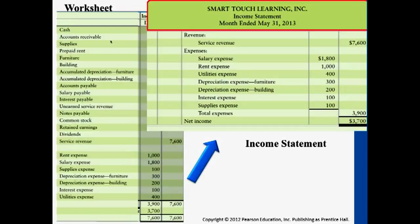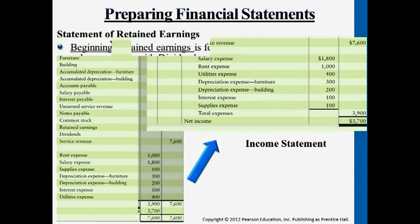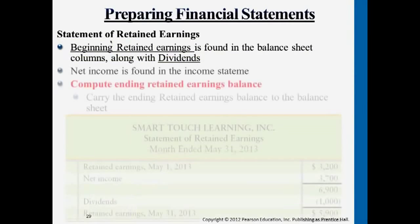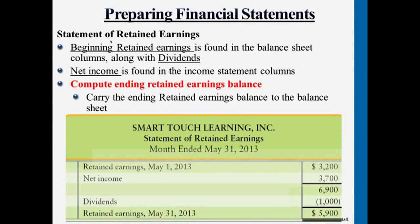Once we have the net income information — thirty-seven hundred dollars — this is linked to the statement of retained earnings. We want to update the retained earnings account. So for the statement of retained earnings, that thirty-seven hundred dollars will appear here again. This is how these two statements link together.